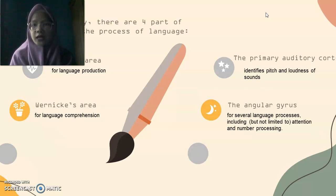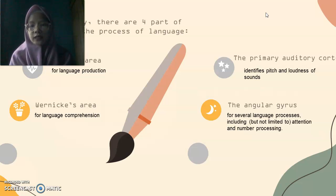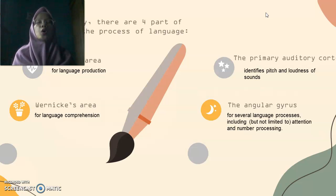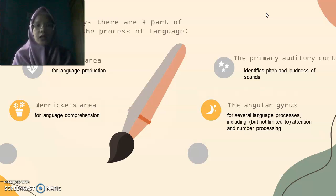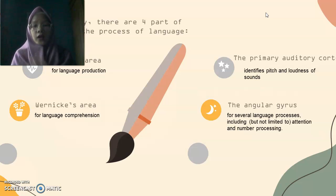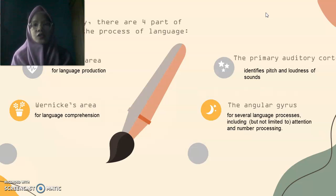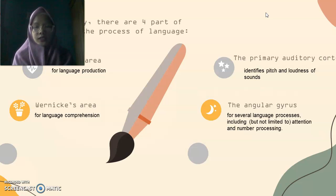Next is the primary auditory cortex. The primary auditory cortex is located in the temporal lobe and is connected to the auditory system. It identifies the pitch and loudness of sound. So when our friend speaks to us, the part of the brain that runs with it is the primary auditory cortex — it detects and identifies the loudness and pitch of sound.